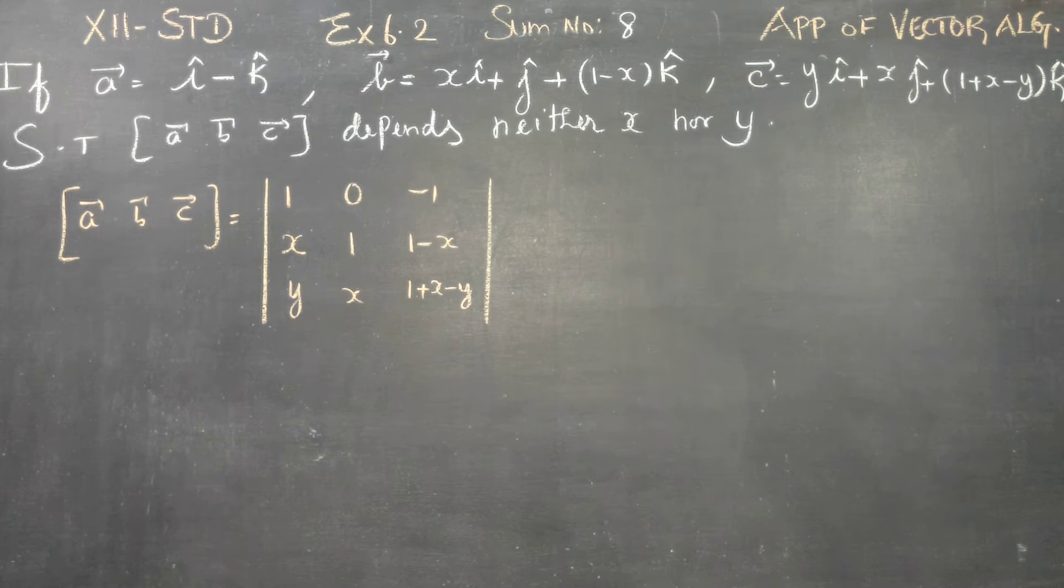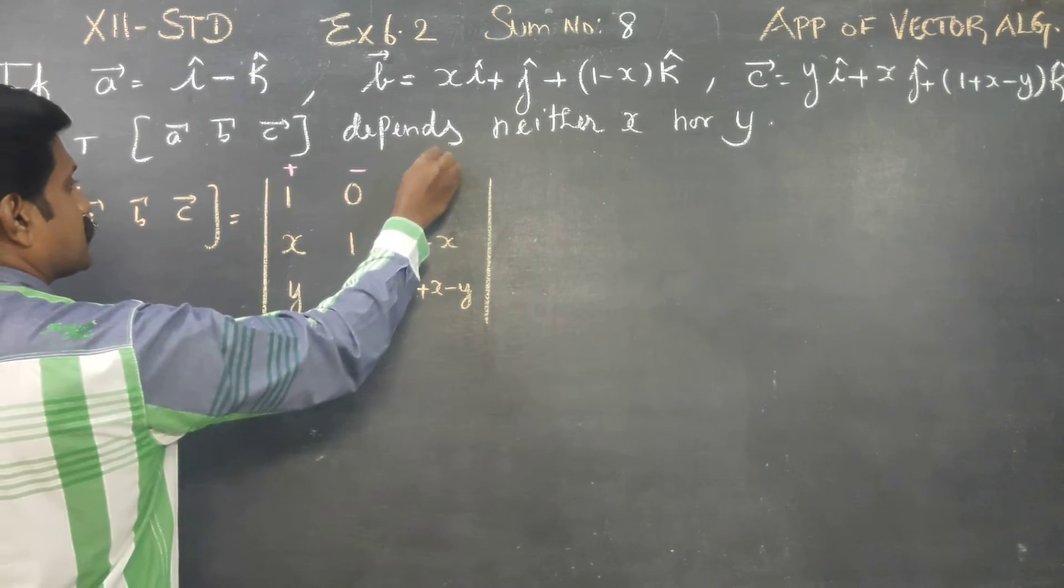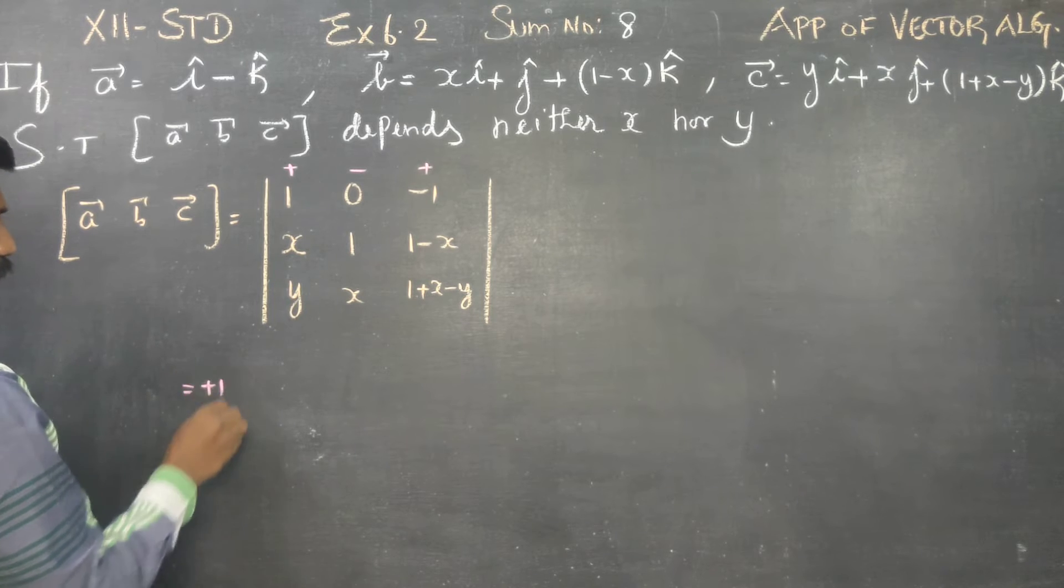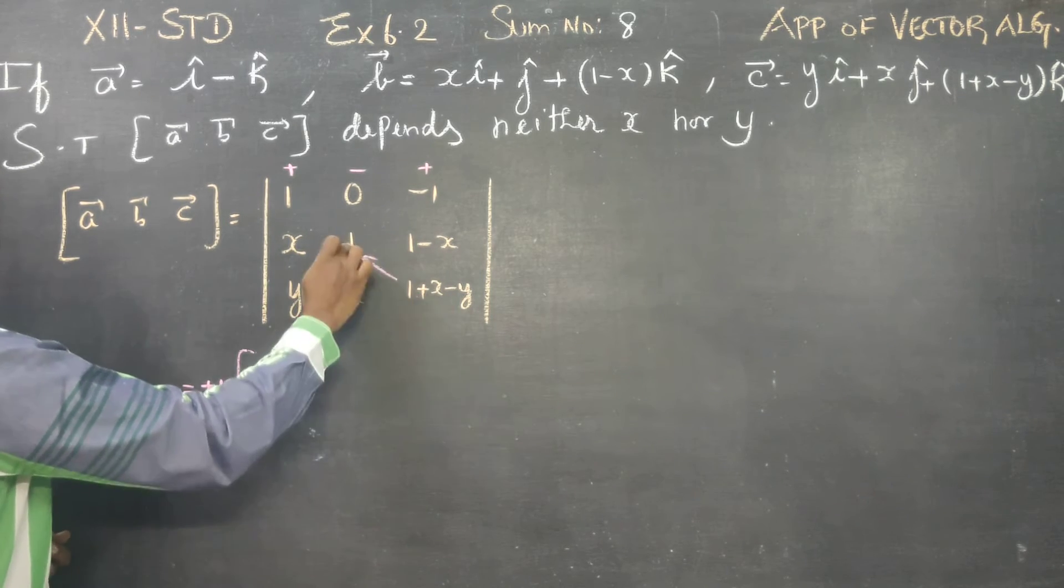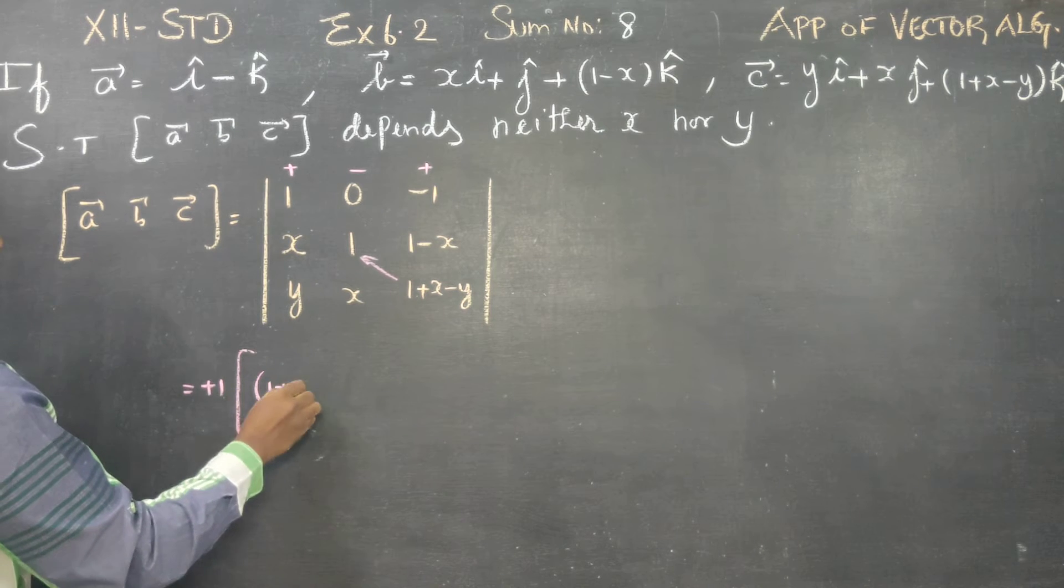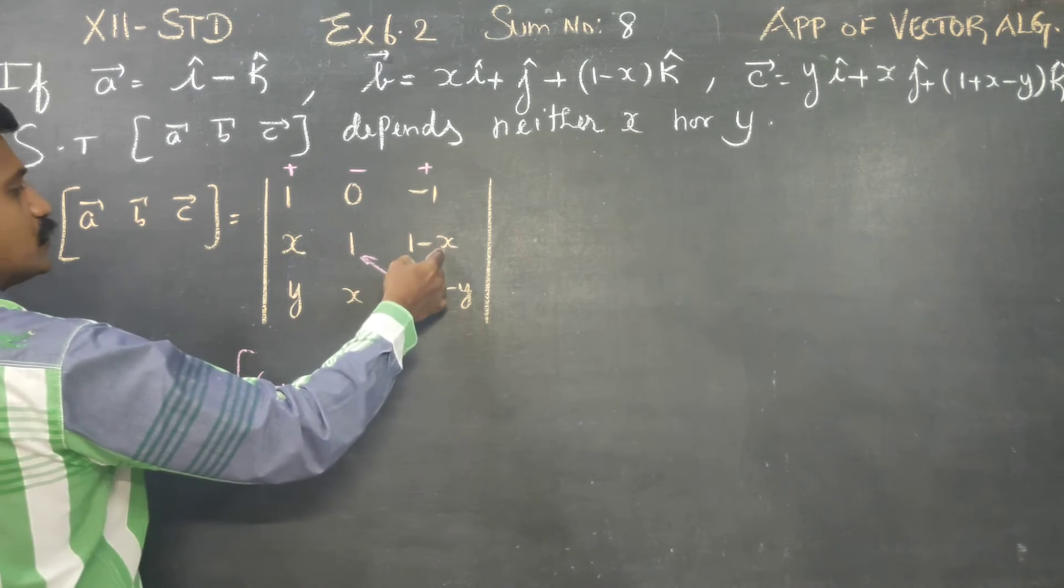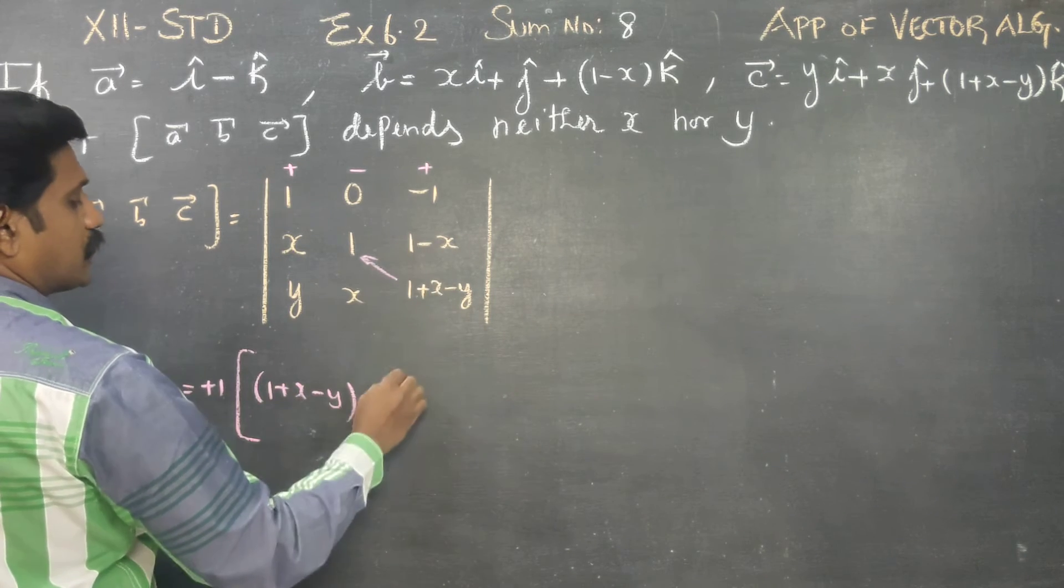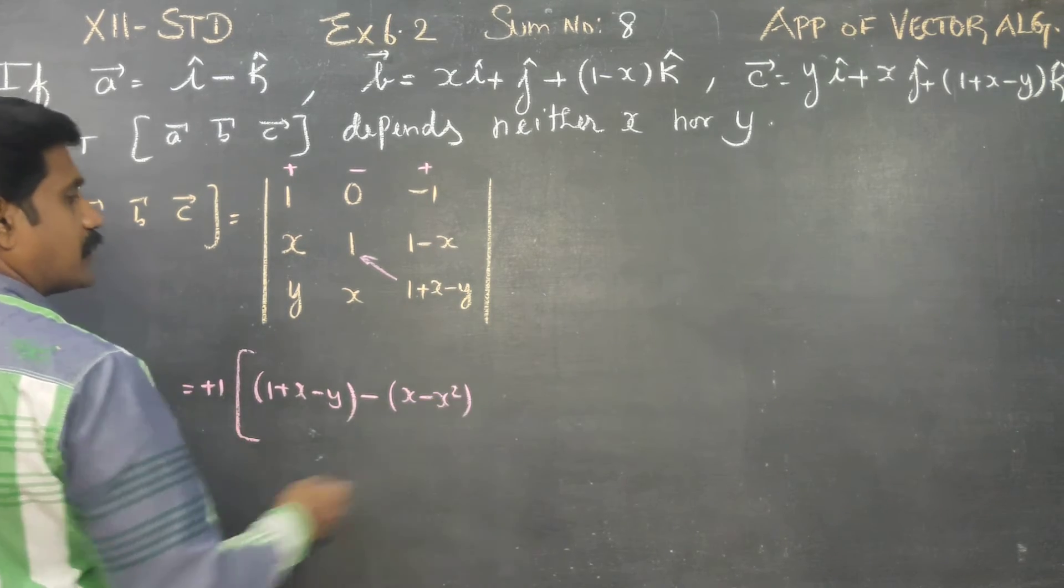This is my box product A, B, C. I have to expand this determinant: plus, minus, plus. Plus 1 into the right hand side. 1 into this is 1 plus x minus y. Minus x into this one. x into 1 is x, minus x square.